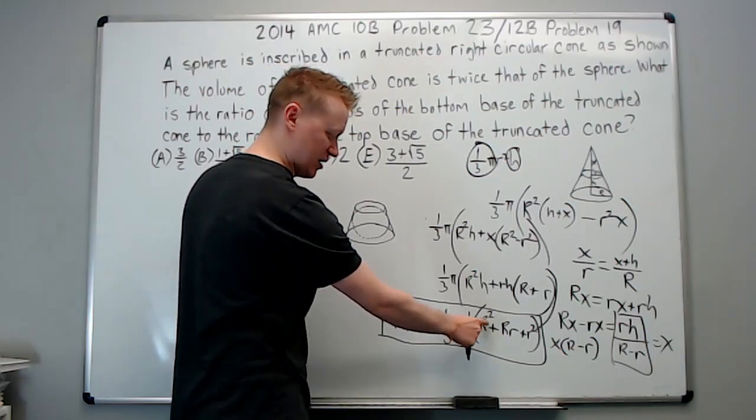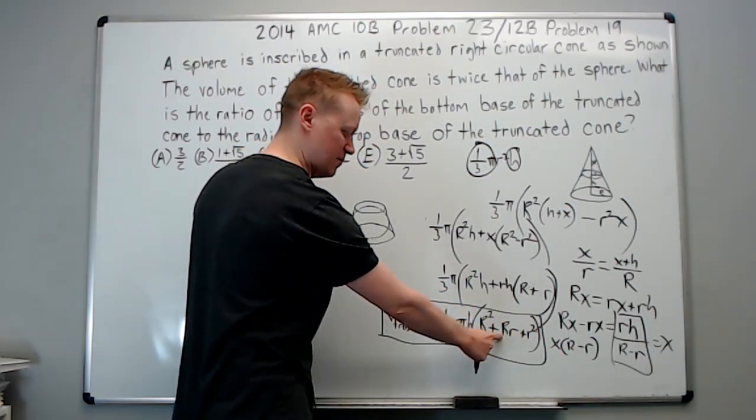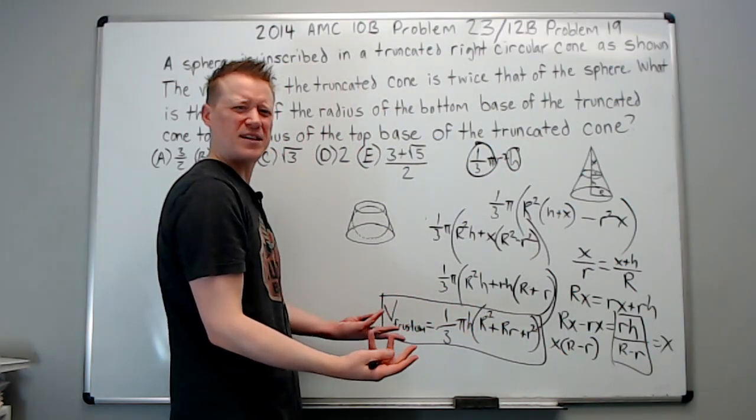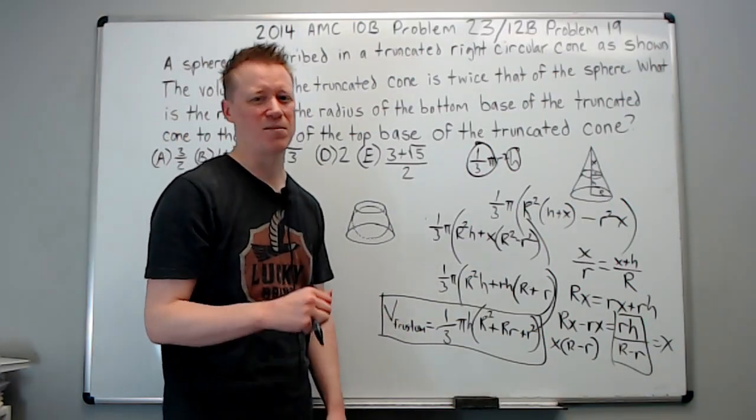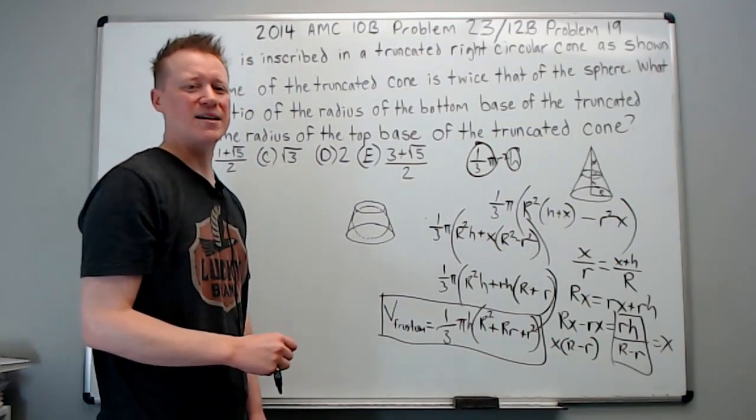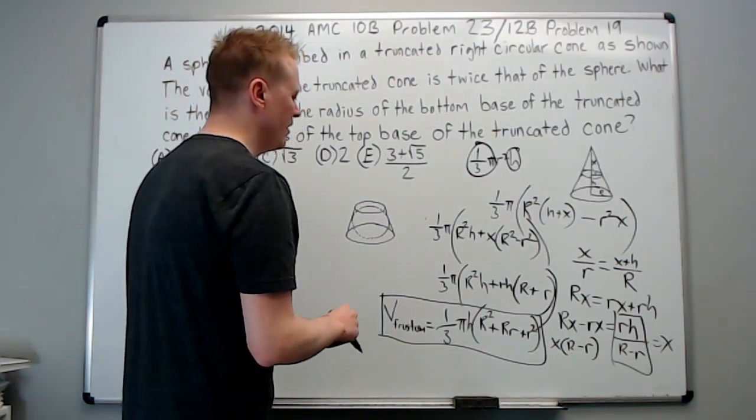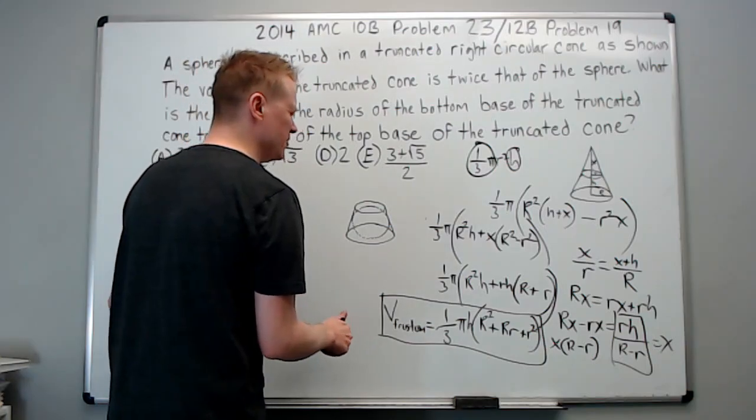It's basically big R squared, little r squared, and big R. There's two r's in each of the expressions. Maybe you can add that to your small notebooks just in case it happens to come up during your middle school and high school mathematical career. So now we have that. Let's move on to the next part.